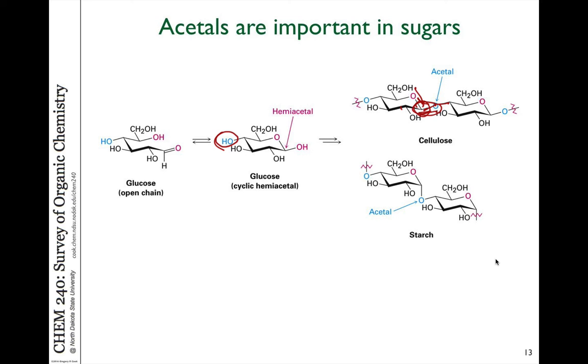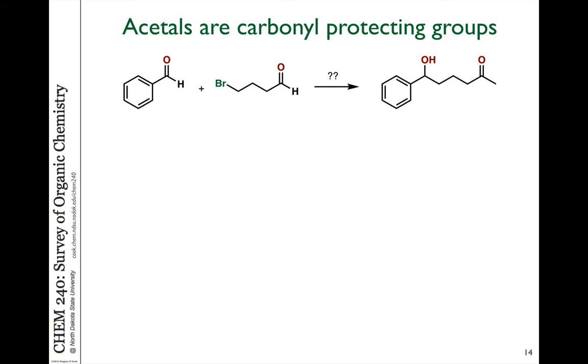Well, one of the benefits of acetals is that they can protect a carbonyl group to prevent it from reacting in cases where we don't want it to react. So for example, I actually have a typo. It should be an aldehyde here, so there's a hydrogen in the product. But let's say we want to do this reaction to generate an alcohol product. And we know we can do a reaction from that bromine to make a Grignard reagent to generate that bond. We have these two starting materials.